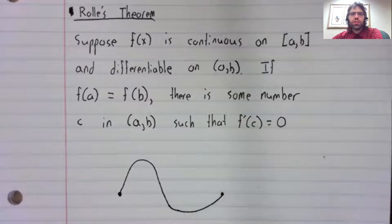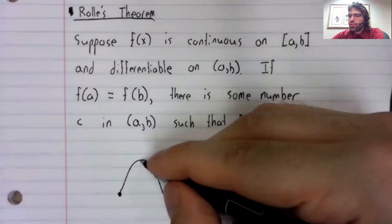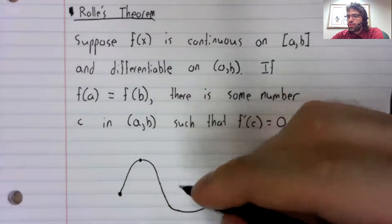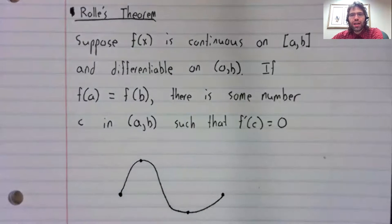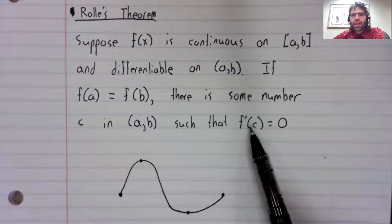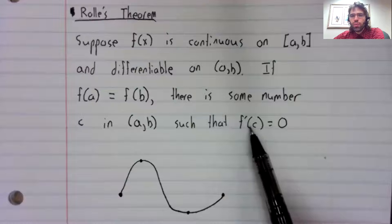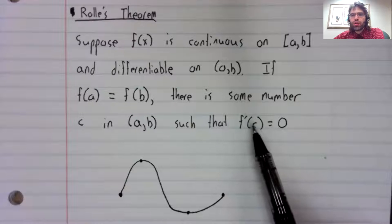Maybe it looks like that. And the extreme value theorem says that this function has to have extreme values. You see it has both a maximum and a minimum. And these extreme values are also points where the derivative is zero.